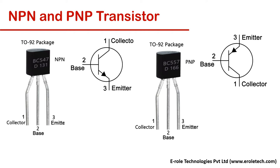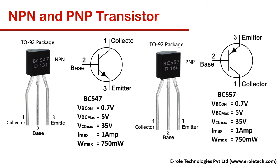Transistors come in various packages. These are BC547 and BC557 TO-92 package transistors. Their characteristics include: turn-on voltage 0.7V, maximum voltage allowed between base and collector 5V, maximum voltage allowed between emitter and collector 35V, maximum current from collector to emitter 1A, and maximum power dissipation 750mW.